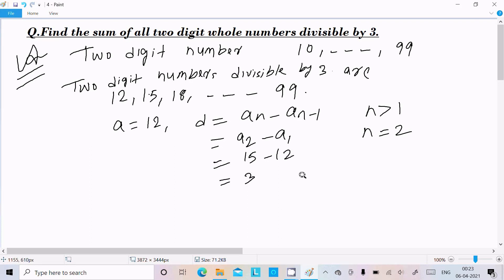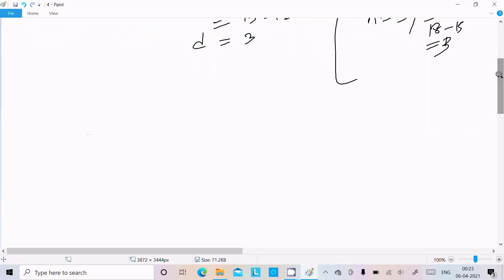So here n equal to 2, so second position is 15 minus 12, so 15 minus 12, the value comes 3. Like that, if I put n equal to 3, so here a_3 minus a_2, so third position is 18, 18 minus 15 equal to 3. So here common difference is 3.